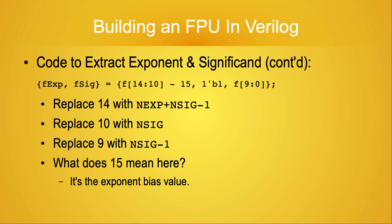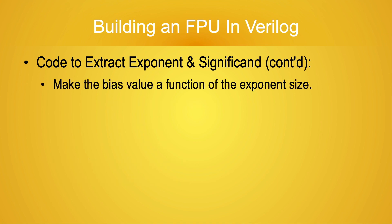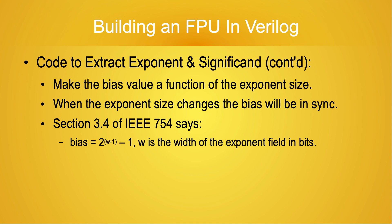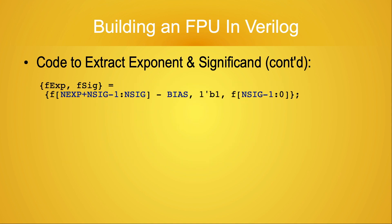It's the value 15 which requires some analysis. This is another example of the value 15 representing the exponent bias value for 16-bit numbers. If we can express the bias value as a function of the number of bits in the exponent field, when the size of the exponent field changes, our new bias value will automatically stay in sync. In section 3.4 of the IEEE standard, we're told that the bias is equal to 2 to the quantity W minus 1 power minus 1, where W is the width of the exponent field in bits. Since shifting the value left is the same as multiplying the original value by powers of 2, we can compute the bias value using this statement. So the line for extracting FEXP and FSIG now looks like this.